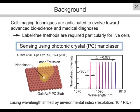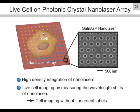The index resolution evaluated in this experiment was on the order of 10 to the minus 5th RIU. In this study, I will present the imaging of live cells using the nanolaser array. We fabricate a two-dimensional array of nanolasers, and high-density integration is possible. We attach the cell on the device; each nanolaser acts as a sensor and image pixel. Live cell imaging is possible by measuring the wavelength shift of all nanolasers — a label-free method without using fluorescent labels.